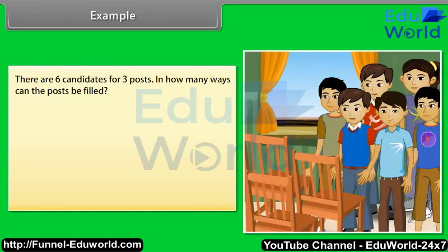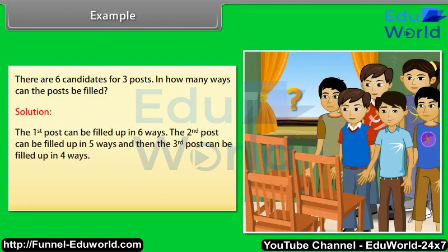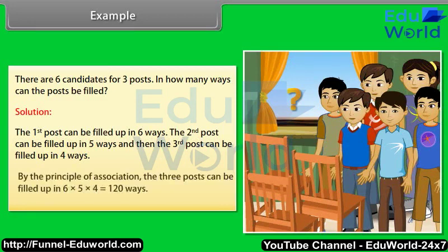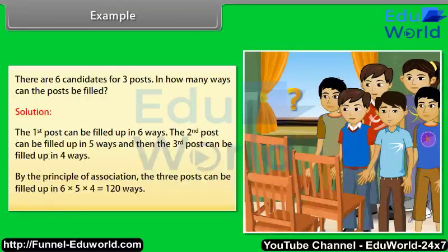Example: There are six candidates for three posts. In how many ways can the posts be filled? Solution: The first post can be filled in 6 ways, the second post in 5 ways, and the third post in 4 ways. By the principle of counting, the three posts can be filled in 6 × 5 × 4 = 120 ways.